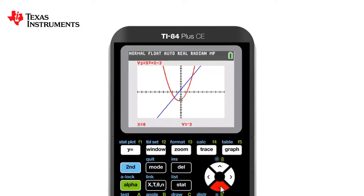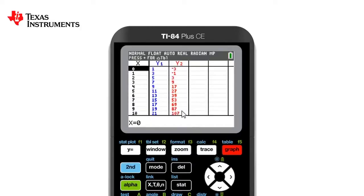If we also want to find other values, we can use the trace key located on the top row. And using the left and right arrow, we can move along either line. This isn't as accurate and a nice application is to press table, which is second graph. This gives us a table of values and conveniently will allow us to find the intersect if it is a clear number.